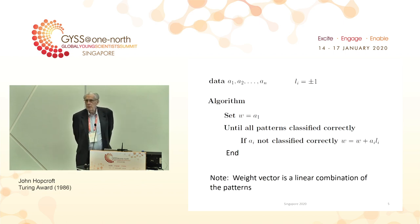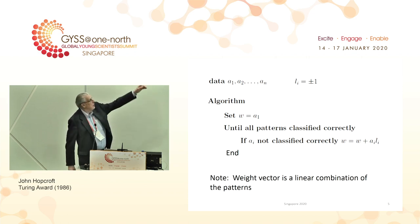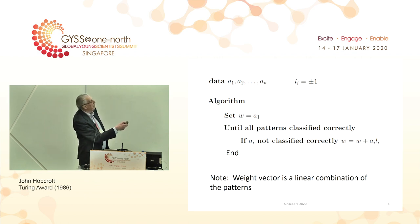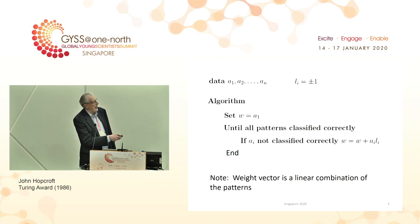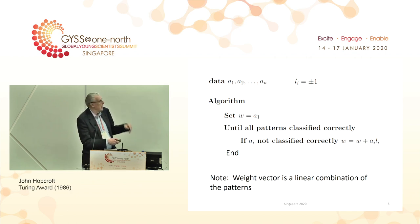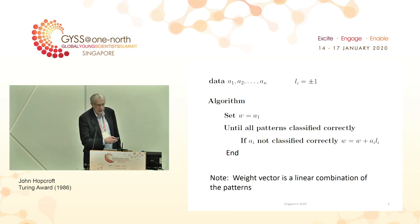Here is an algorithm for training a threshold logic unit to separate some data. My data is A1, A2 up to AN. First I set the weight vector to the first pattern. Then I repeatedly cycle through all patterns until they're all classified correctly. If an input is not classified correctly, I add it or subtract it from the weight vector. What's important is that the weight vector is a linear combination of the patterns — something which is going to be very important in a couple of slides.